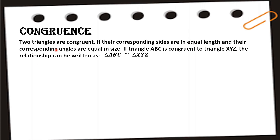Unlike correspondence, where it doesn't matter if the sides and angles are equal or proportional, in congruence the figures must be totally equal in length and in angles. In short, they must be exactly the same.